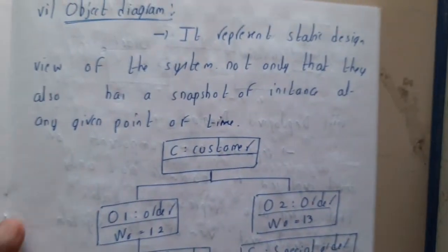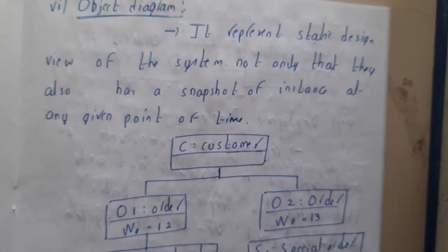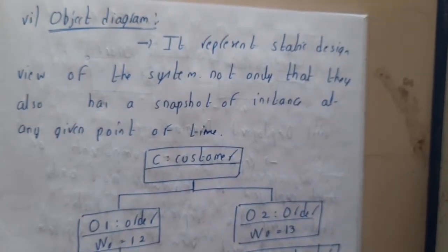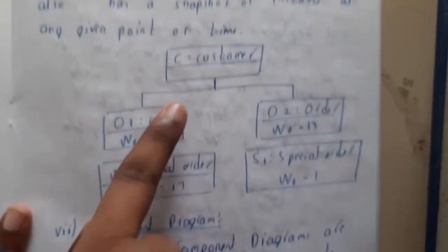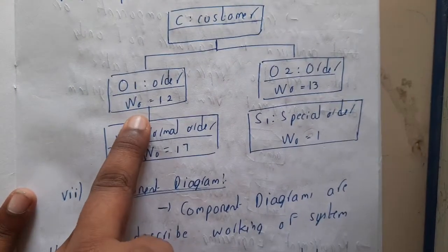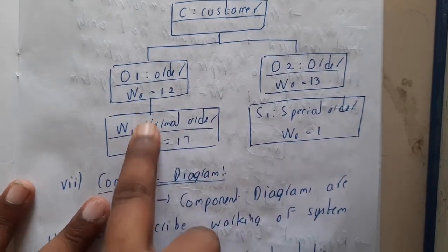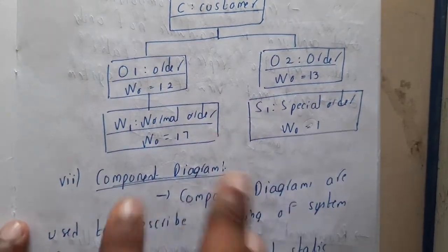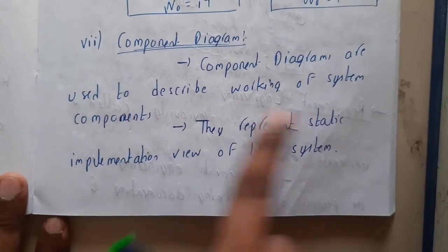We also have object diagrams — since we have class diagrams, you might wonder if there are object diagrams too, and yes there are. Object diagrams represent the static design view of the system. For example, an object 'Order1' and what it contains is represented; inside Order1 we have a Normal Order with its order number.